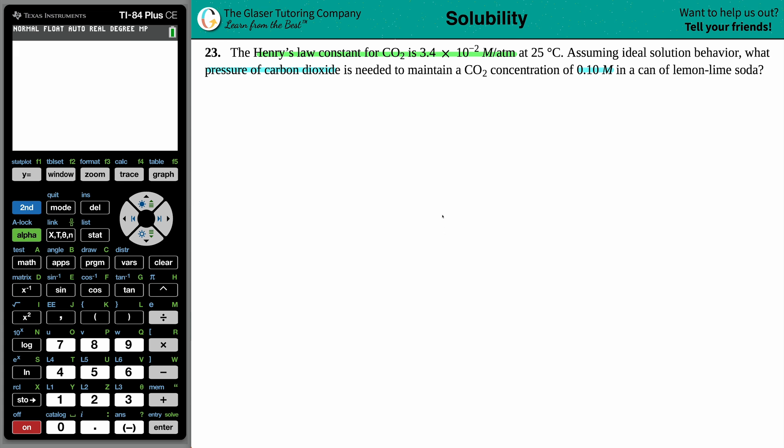Okay, so seems like we're setting up a math problem here. They gave us a Henry's Law constant, 3.4 times 10 to the negative 2. They're asking for what is the pressure of carbon dioxide. So I'm looking for the pressure of CO2, right?